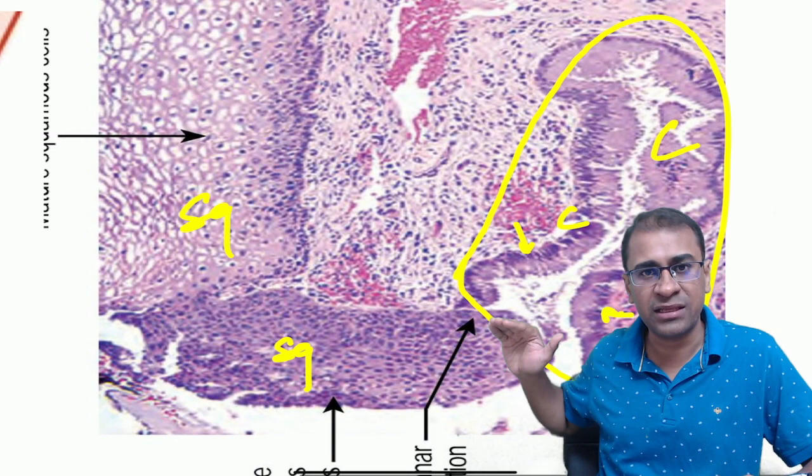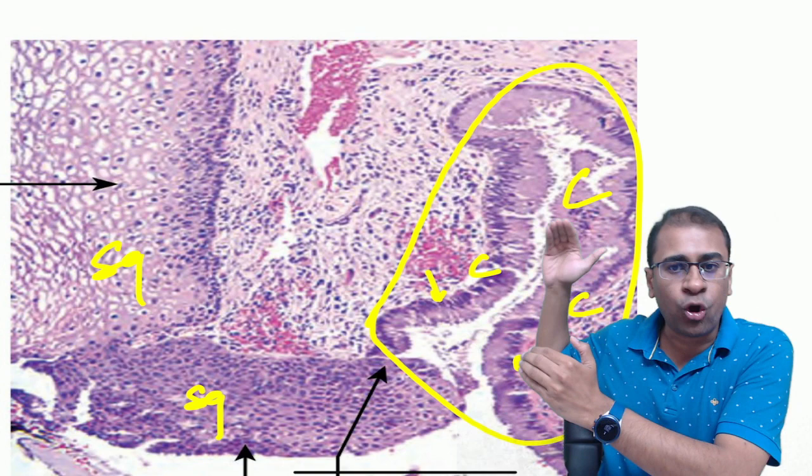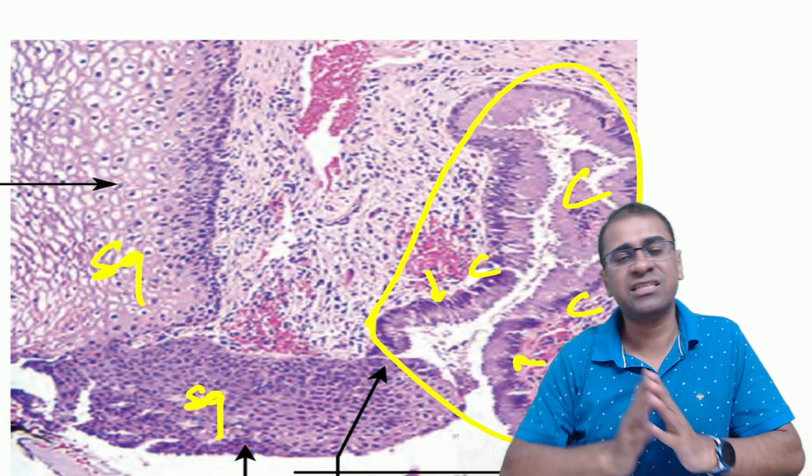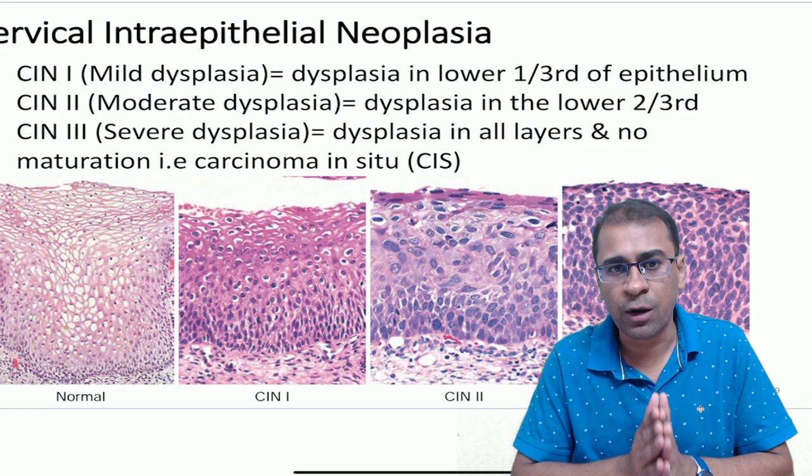The next topic is the cervix. A cervix has squamous epithelium — look at the mature one, the immature one — and this is called columnar epithelium. So this one is the endocervix but this is the ectocervix. Remember, the squamous epithelium will keep on replacing the columnar cell and hence this area is called the transformation zone. The transformation zone keeps on moving up as age progresses.